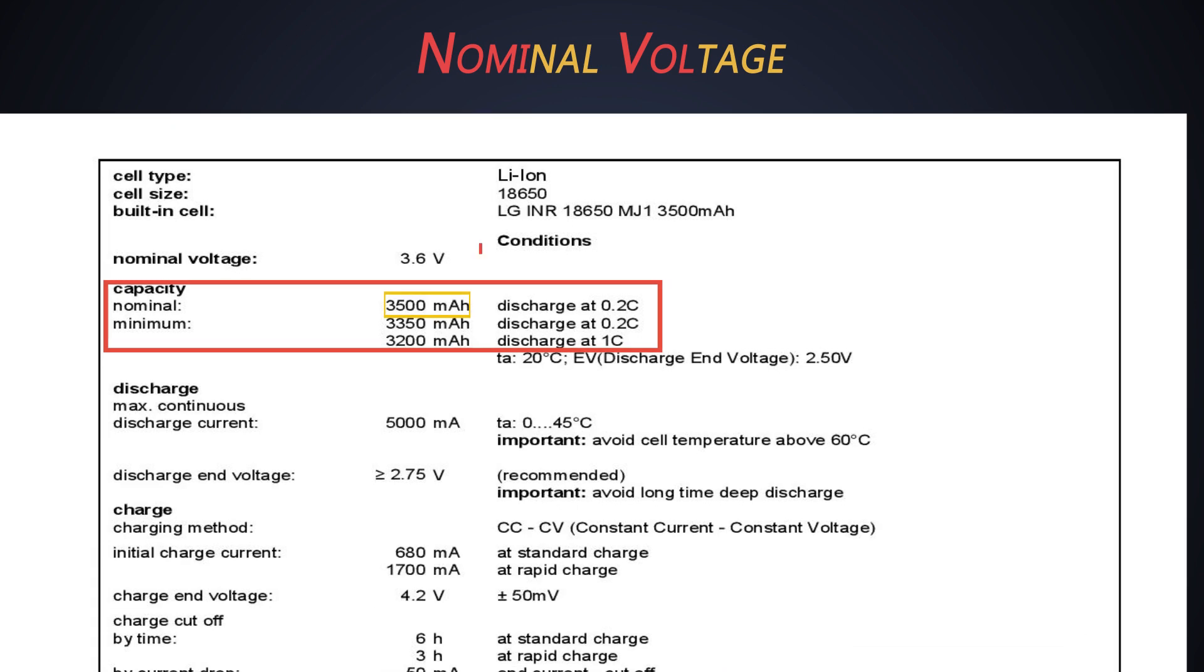Next is the nominal voltage. It is the reference voltage of the battery, also called the normal voltage of the battery. This thing is mentioned on the cell itself.